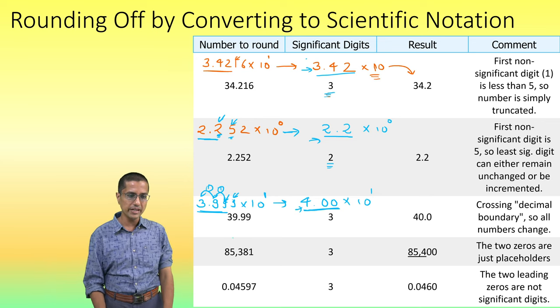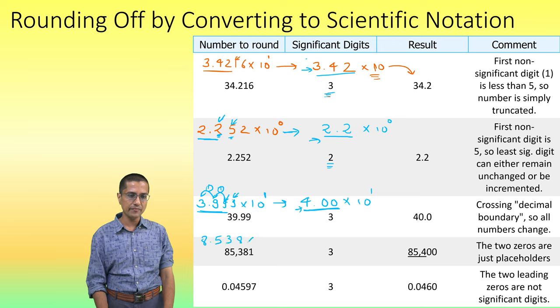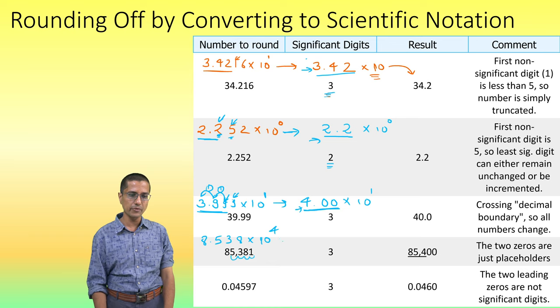So, let us look at this example. Here, what we will do, we will just write it as 8.5381 × 10⁴. Because we have moved the decimal point 1, 2, 3, 4 digits. So, we will keep 4 here. And I want to round it off to 3 digits, 3 significant digits. I want to only keep these 3 digits.